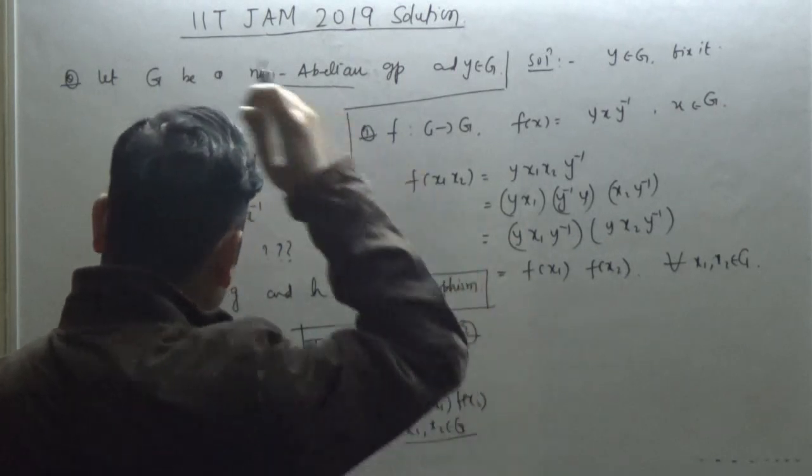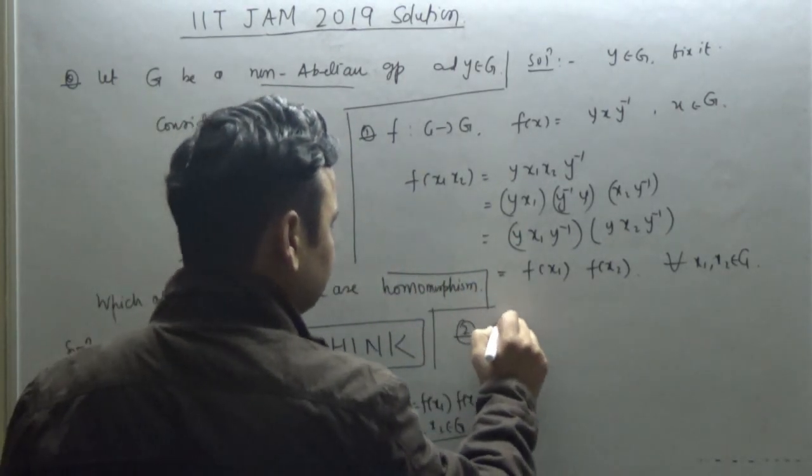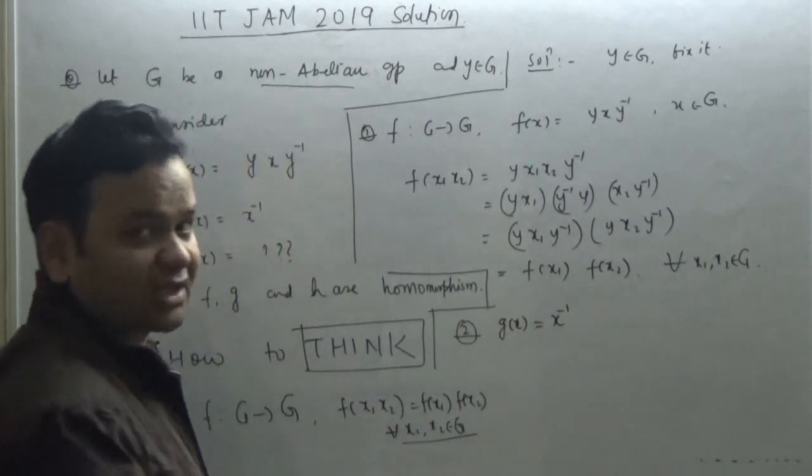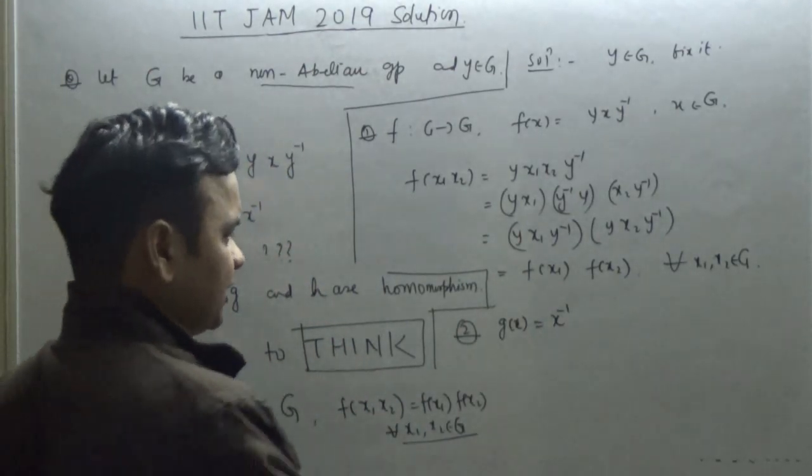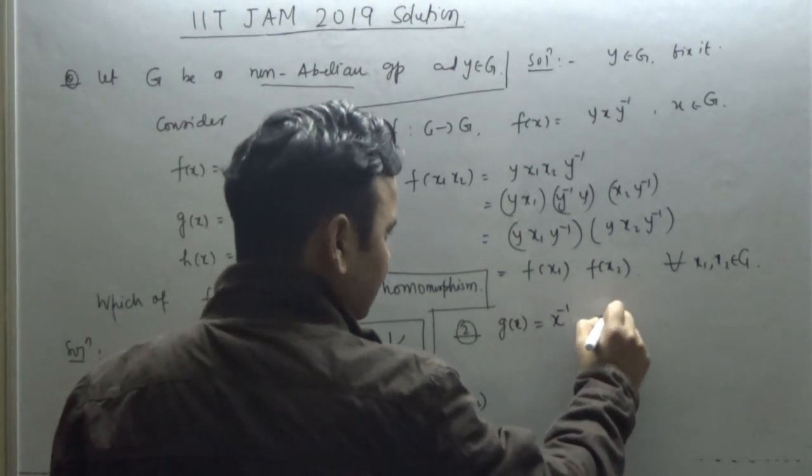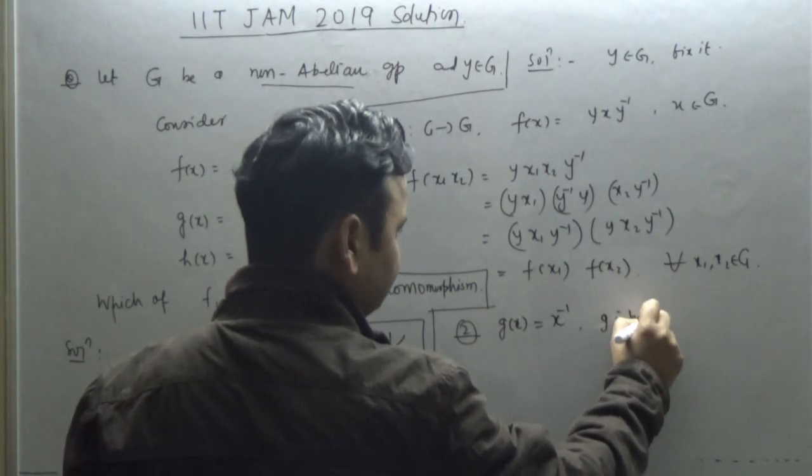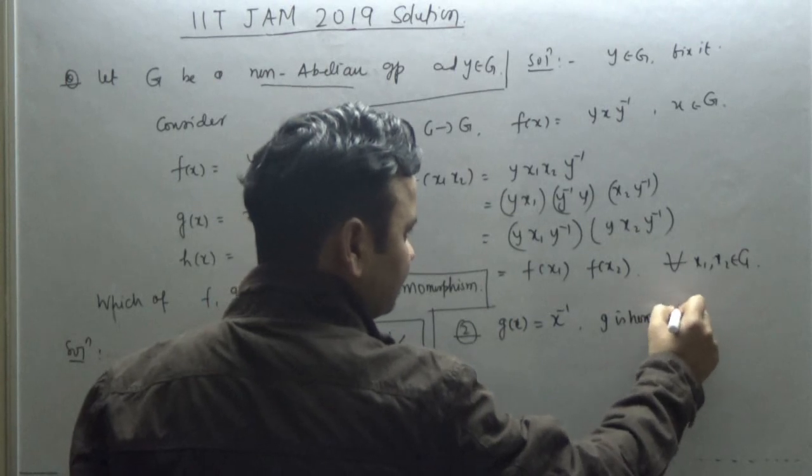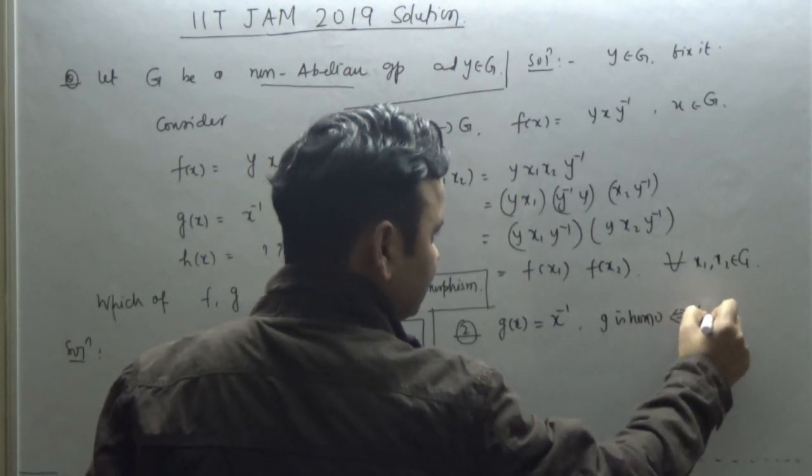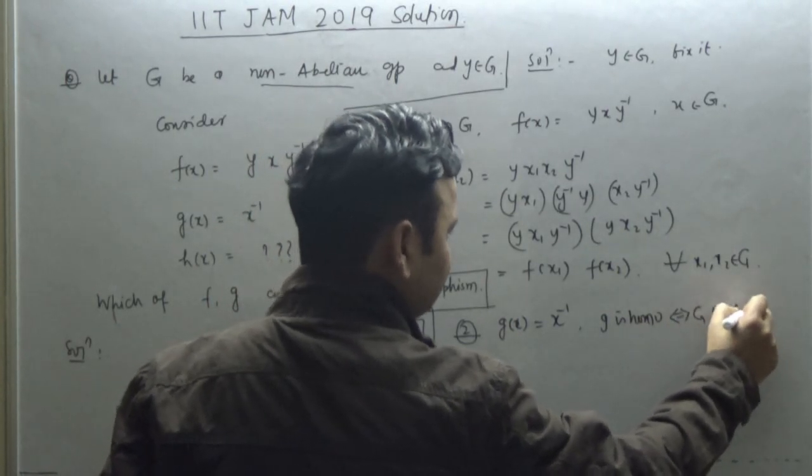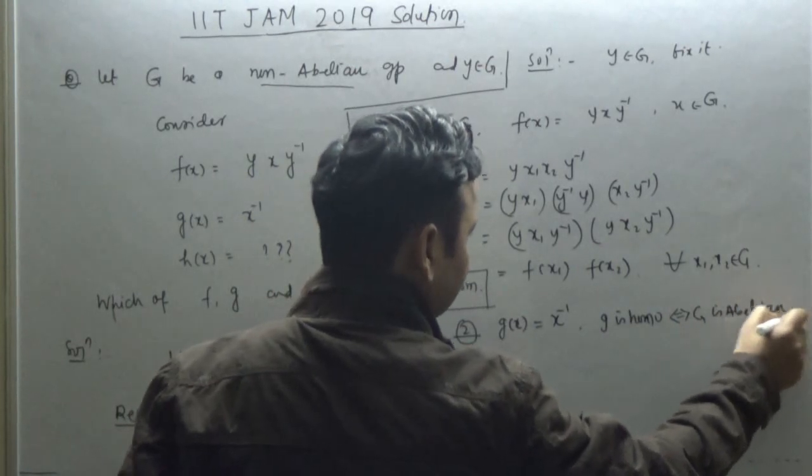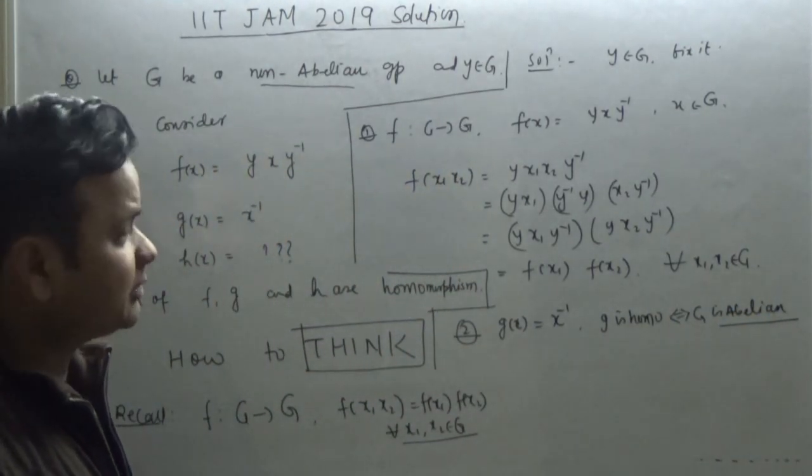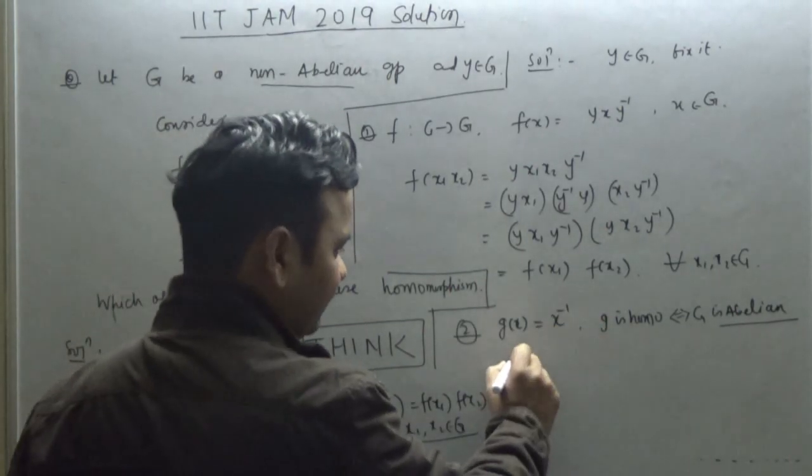Now let's come to the second function. The second function you have defined: g(x) is equal to x inverse. So g is a homomorphism if and only if capital G is abelian.